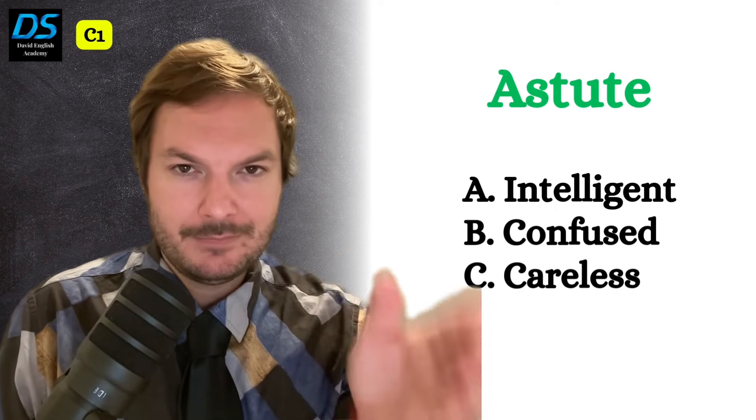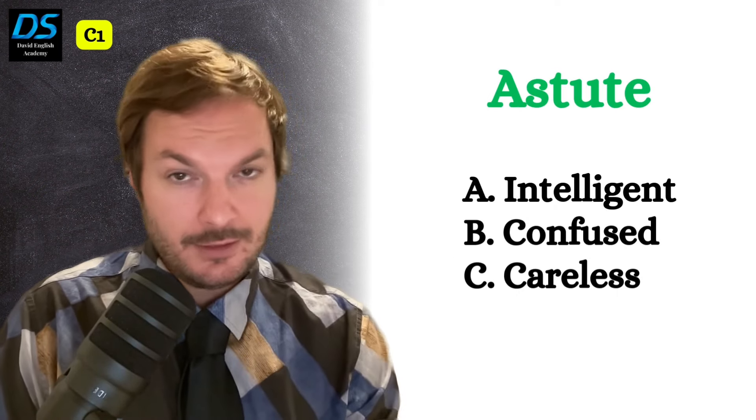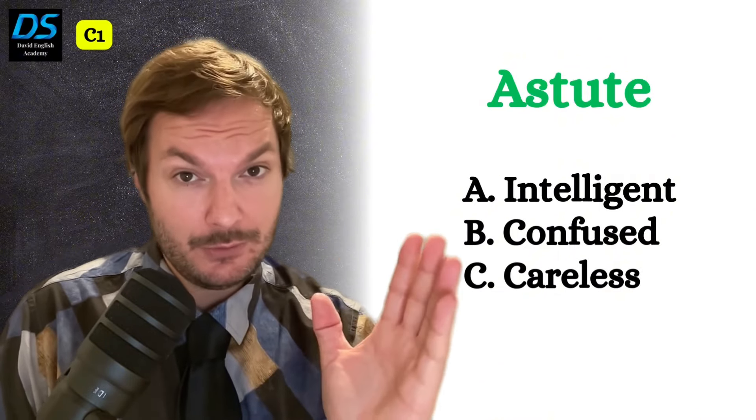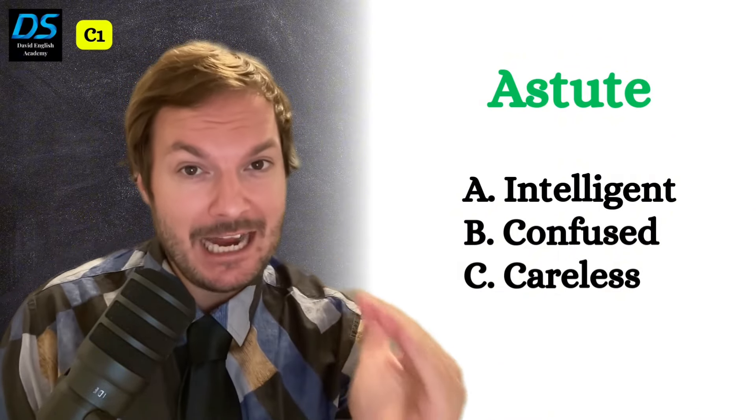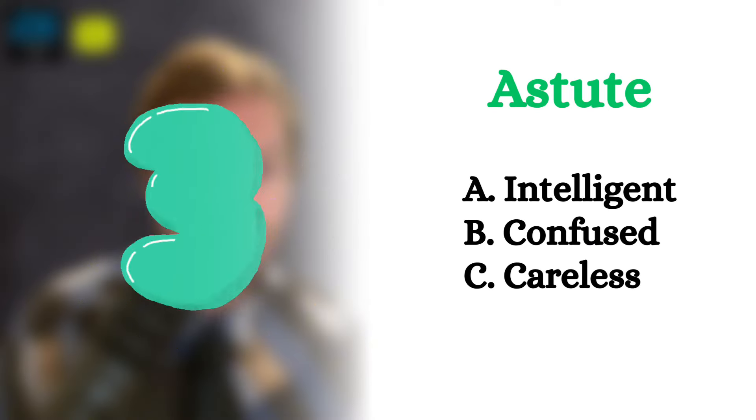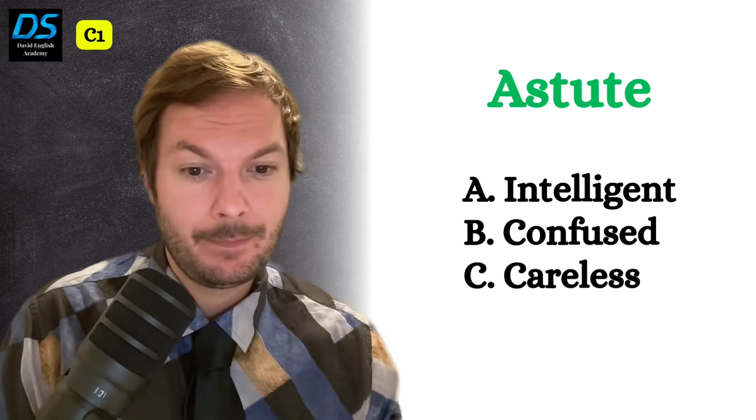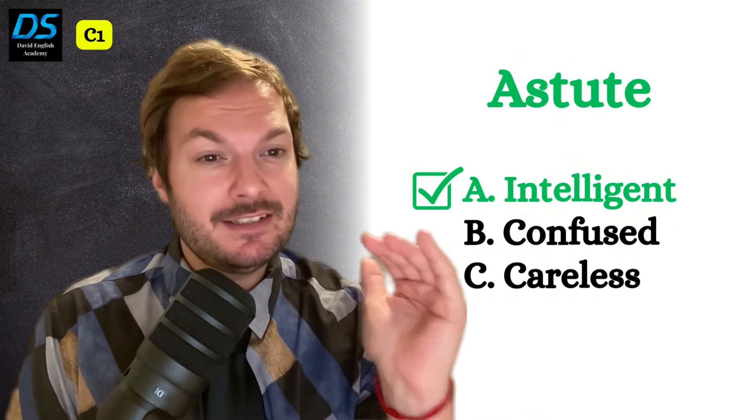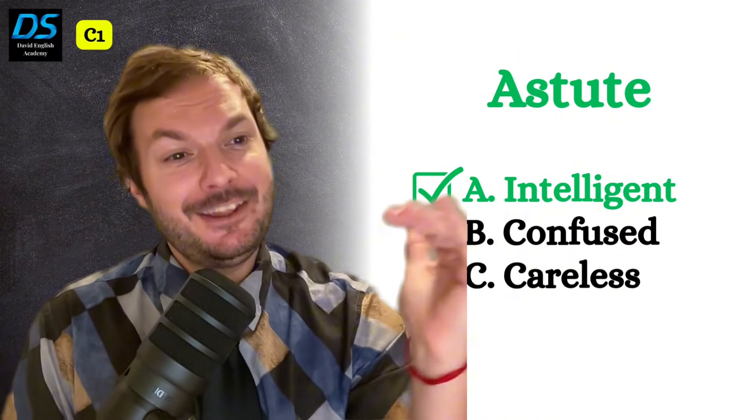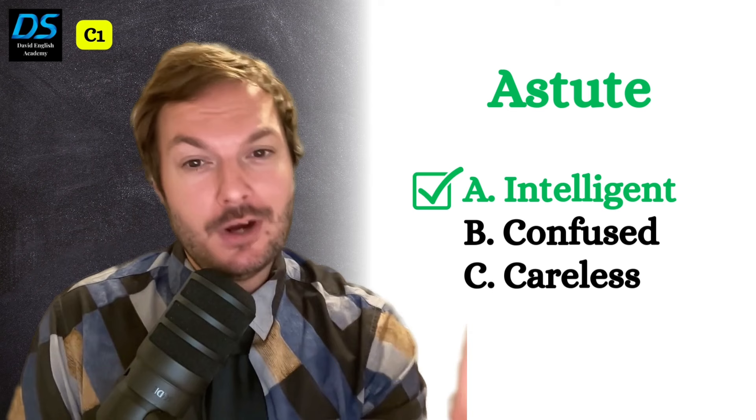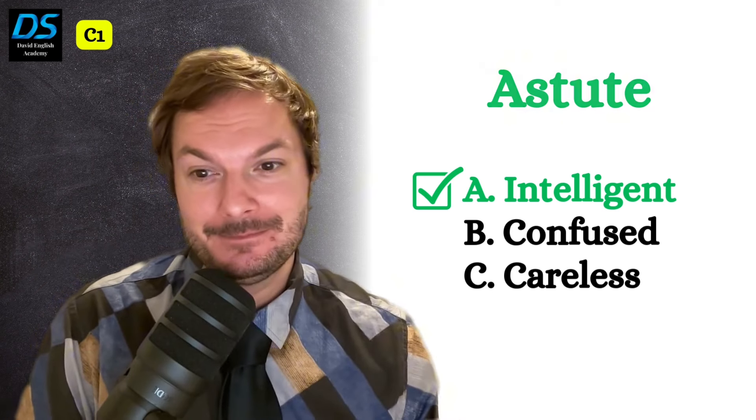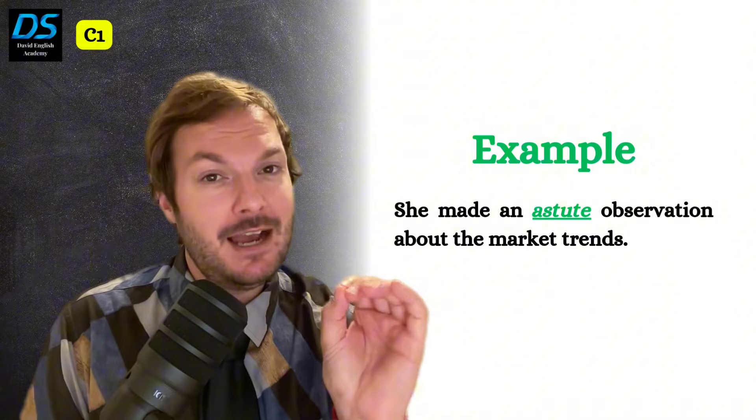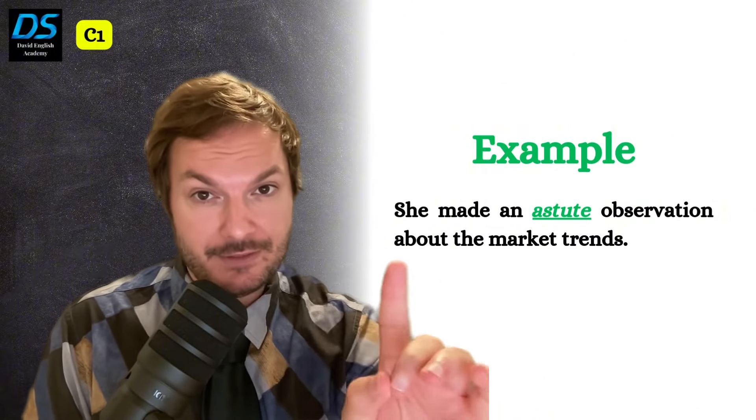Next word. Astute. Does this word mean intelligent, confused, or careless? Astute means having the ability to assess situations and turn them to one's advantage. Example. She made an astute observation about the market trends.